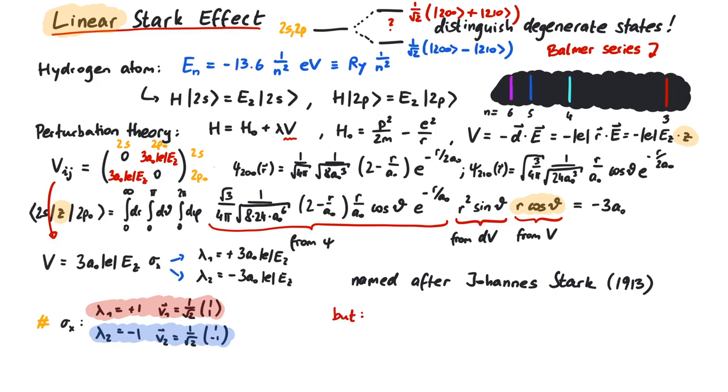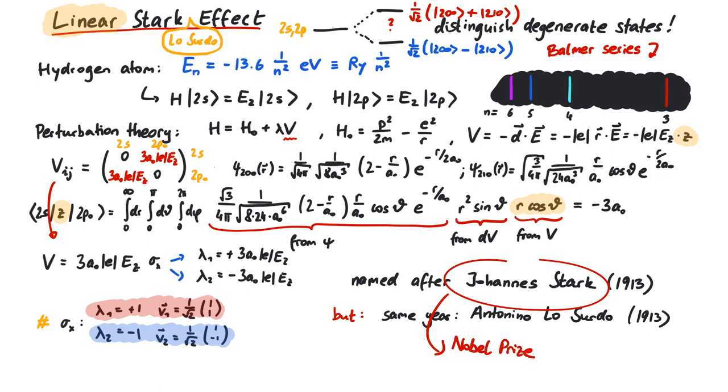In the same year, Italian physicist Antoninio Losurdo also discovered the very same effect, which is why it is sometimes called the Stark-Losurdo effect. However, only Johannes Stark was awarded the Nobel Prize in Physics in the year 1919.